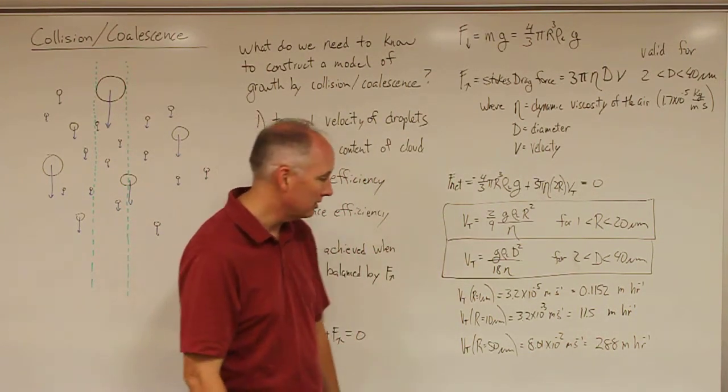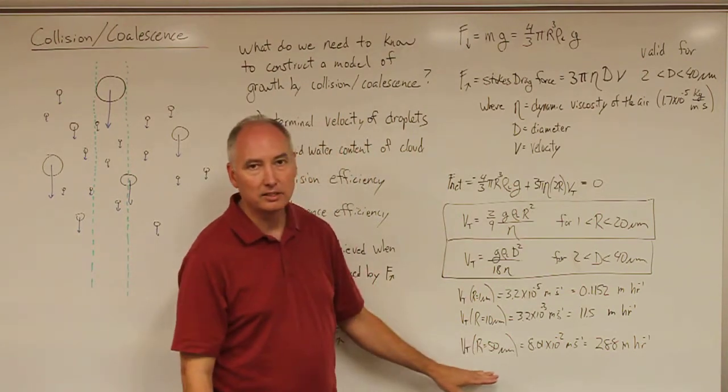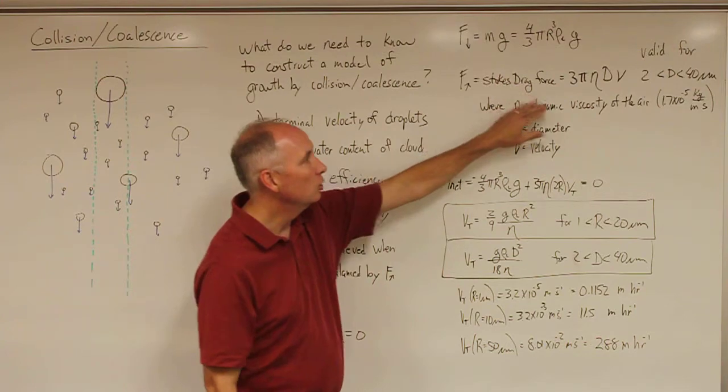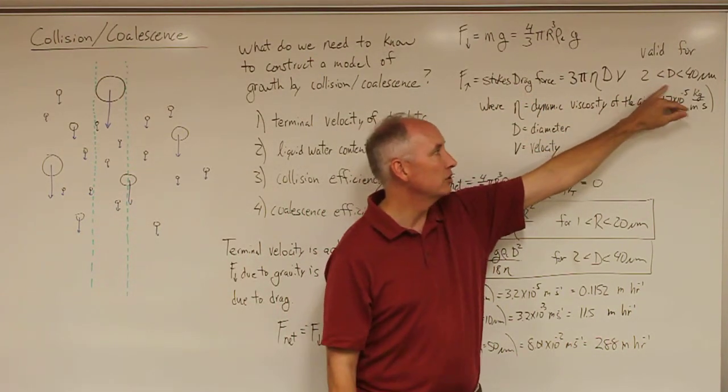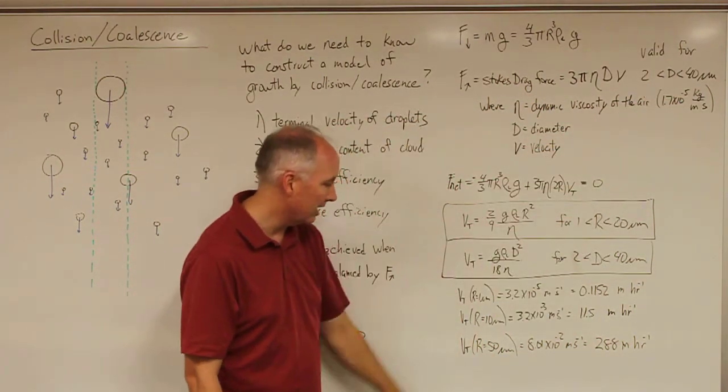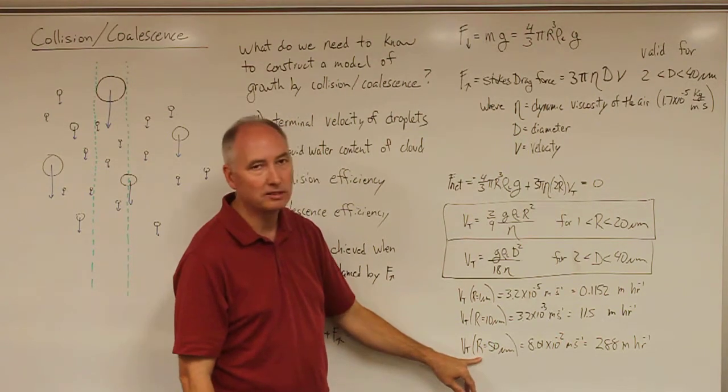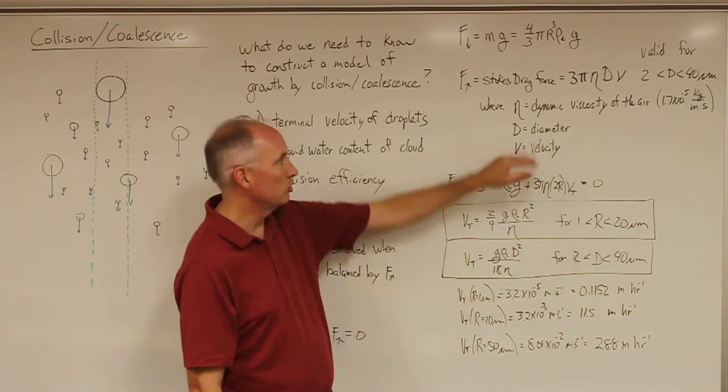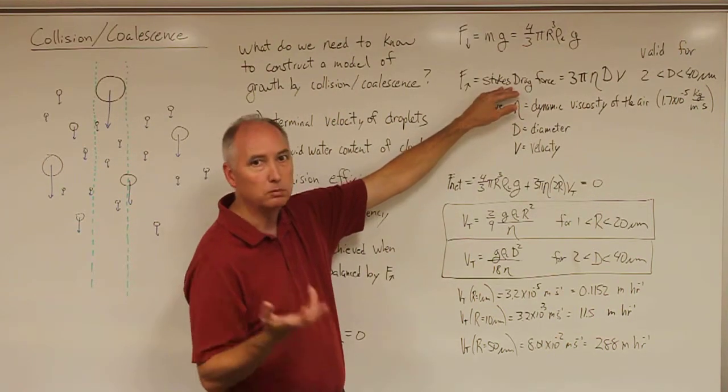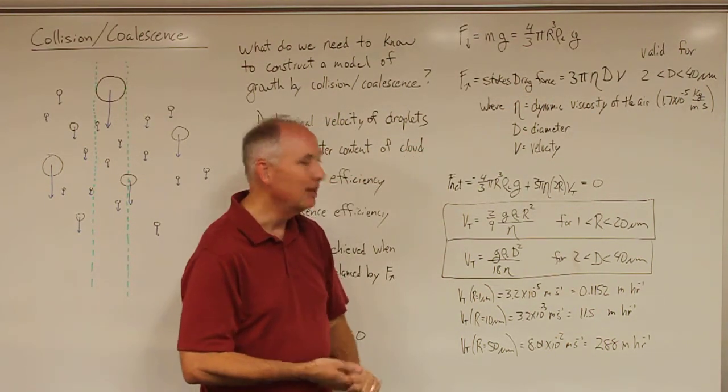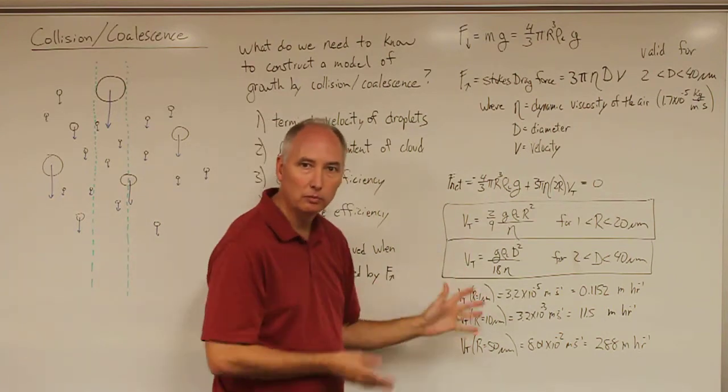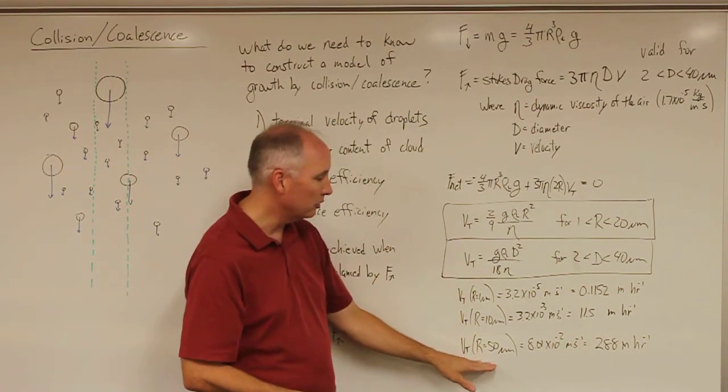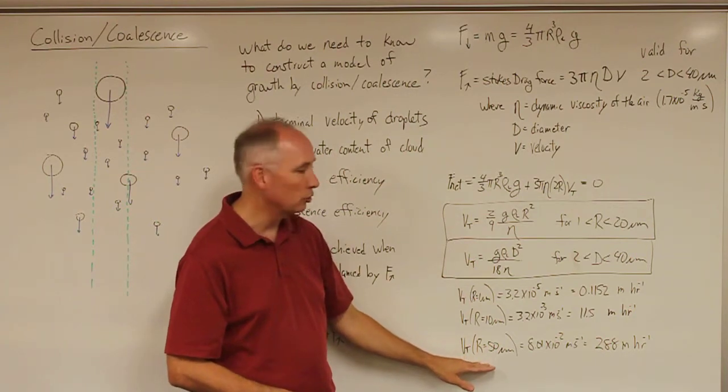We can take this and go beyond the strict limits of Stokes drag, which is strictly valid between 2 and 40 micrometers per diameter. If we do a radius of 50 micrometers, which is a diameter of 100 micrometers, then Stokes drag force is no longer the appropriate drag force. But I just wanted to see what kind of number we would get if we plugged in the fall speed of a drizzle droplet.